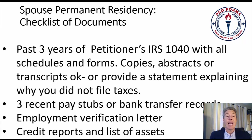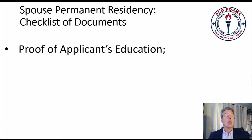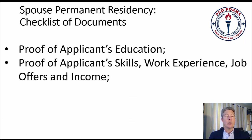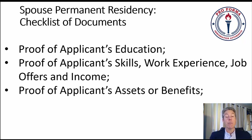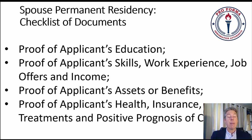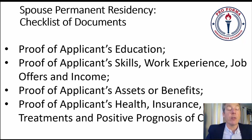Credit reports and lists of assets are important for the self-sufficiency piece — that would be for both petitioner and beneficiary. Proof of the applicant's education — again for self-sufficiency, we want to show your level of education. Proof of applicant skills, work experience, and job offers. Proof of applicant's assets or benefits — sometimes you have assets or payable benefits, so we want to document those. Proof of applicant's health insurance, treatments, and positive prognosis of any condition if there's a health problem.